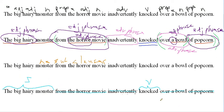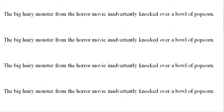Last step: we need to identify the type of sentence. The type of sentence we're looking at here is a simple sentence. We have one main clause, no subordinate clauses. One main clause, no subordinate clauses.